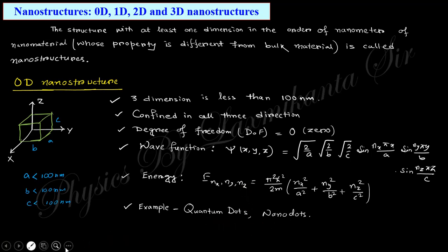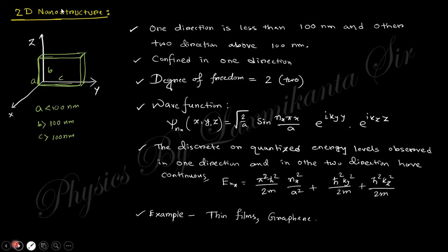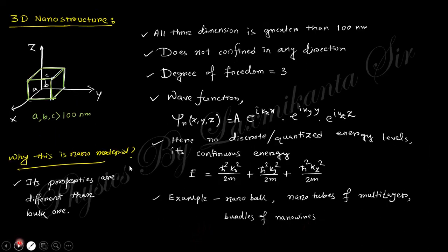For one-dimensional nanostructure, two dimensions are in the nanometer order and one dimension is above the nanometer order, so the degree of freedom is one — confined in two directions. The wave function and corresponding energy value reflect this. Examples: nanowire, nanorod, quantum wire, carbon nanotube (CNT). For two-dimensional, confinement is along only one direction and two dimensions are above the nanometer order, so degree of freedom is two. Examples: thin film, graphene.